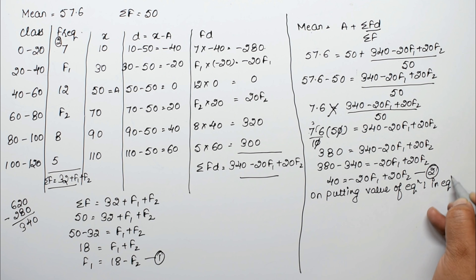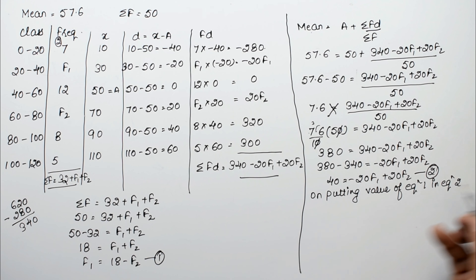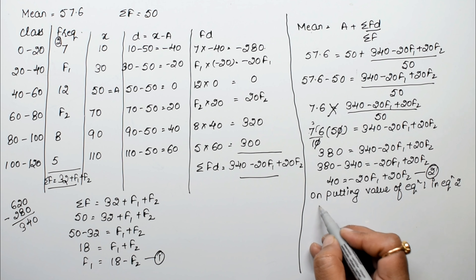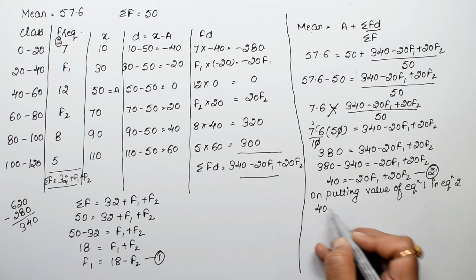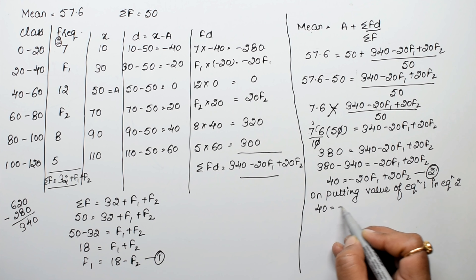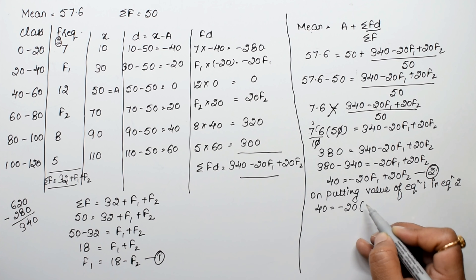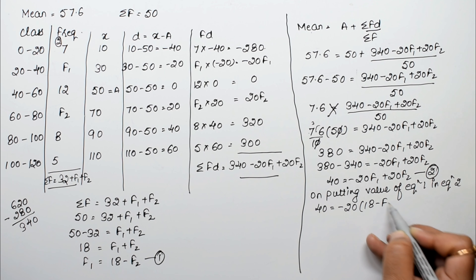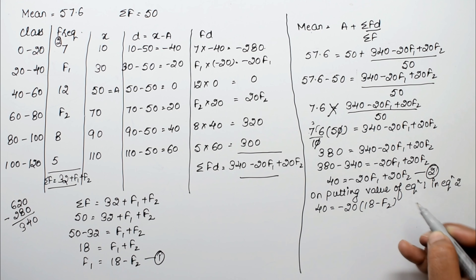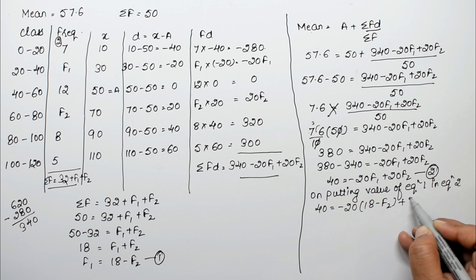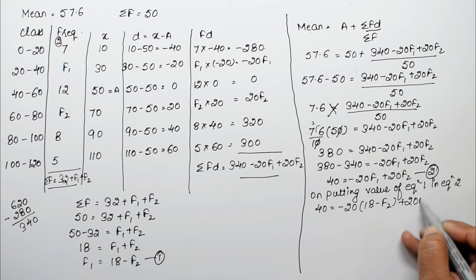Using equation 1, f1 equals 18 minus f2. Substituting into equation 2: 380 equals 340 minus 20(18 minus f2) plus 20f2, which simplifies to 380 equals 340 minus 360 plus 20f2 plus 20f2.